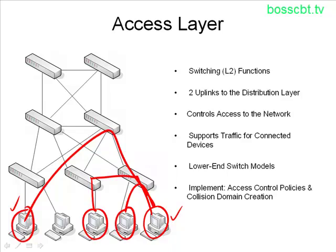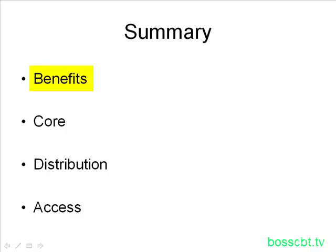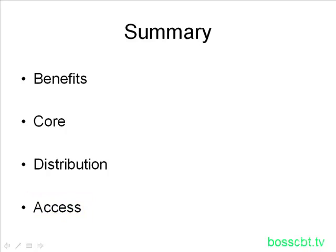Let's take a quick summary of what we went over. There are many benefits to using a design model like this one — primarily it gives us a common point of reference and common terminology to discuss networks. We looked at the three layers: the core layer, which is your network backbone for fast transit of information; the distribution layer, where Layer 3 functionality, security policies, and most of the network work takes place; and finally the access layer, which is your switching layer that controls access to the network. That is the model used for Cisco hierarchical network design. Thanks for watching.